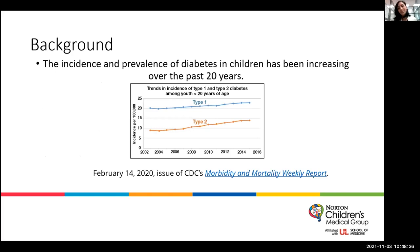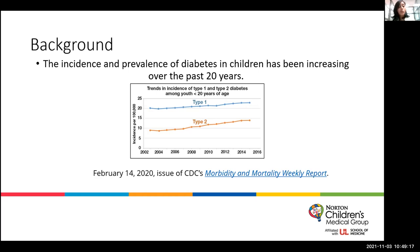Just a little bit of background. According to the CDC's most recent data, the incidence and prevalence of diabetes in children has been increasing quite steadily over the past 20 years, and this is true for both type 1 and type 2 diabetes. In 2009, type 1 diabetes affected about 1 in every 518 youth less than 20 years old, with an incidence of about 22 per 100,000 individuals per year. The SEARCH for Diabetes study estimates that each year approximately 18,000 new cases of type 1 diabetes occur in youth under age 20.